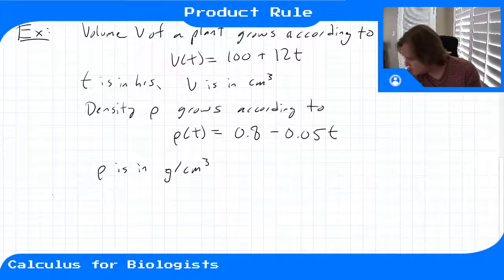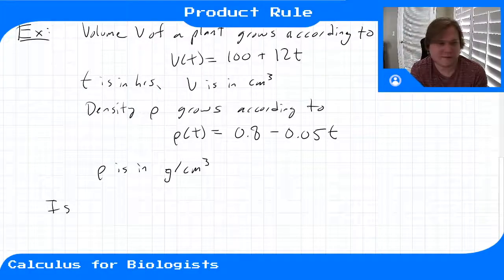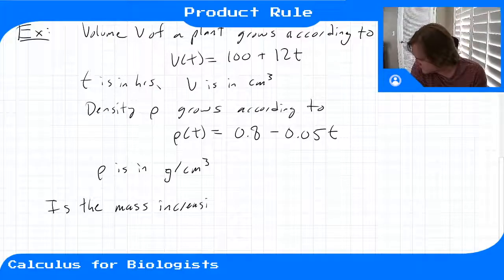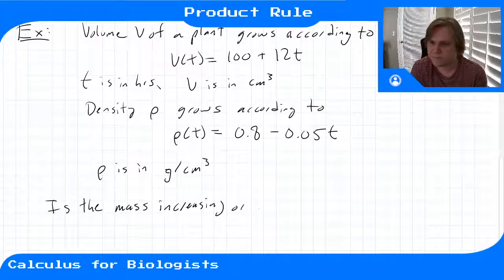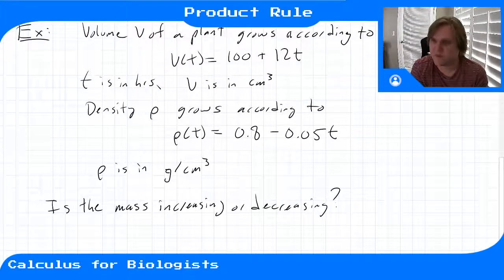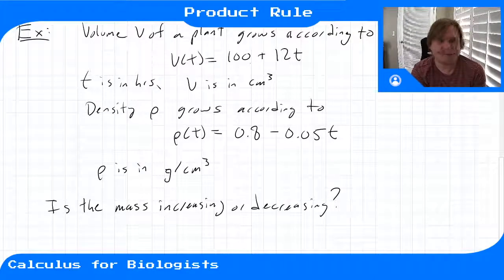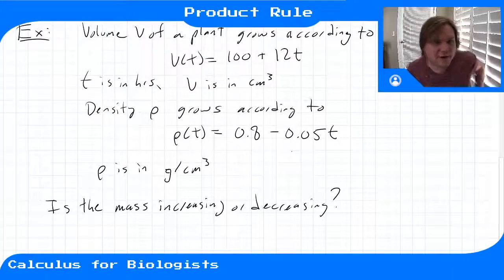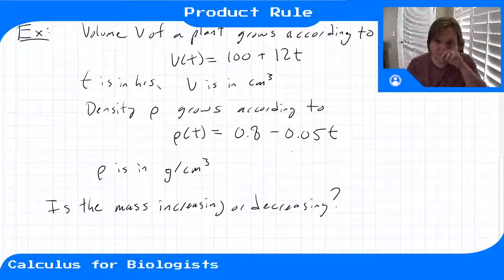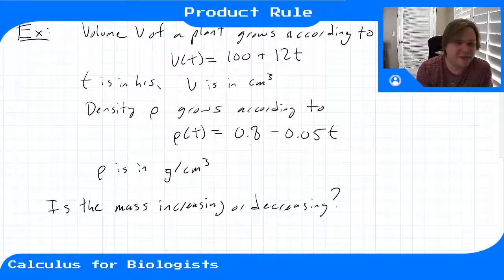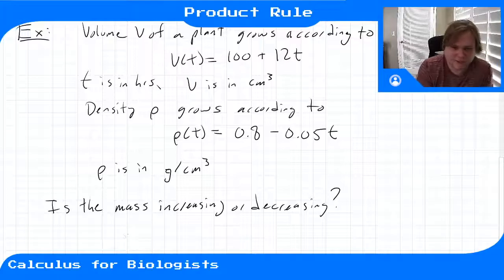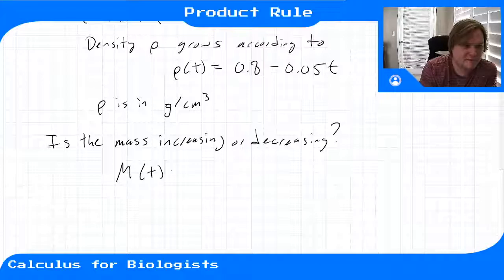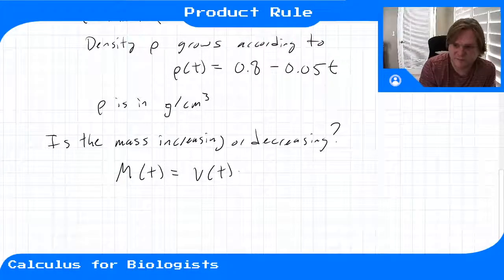So then the question is, is its mass increasing or decreasing? It looks like the volume is an increasing function, but the density is a decreasing function. So is the mass going to be growing or shrinking? That's going to depend on the derivative of that mass. So let's write down the mass equation.